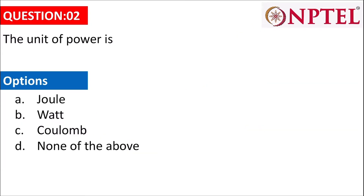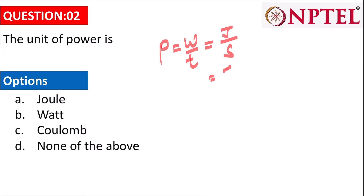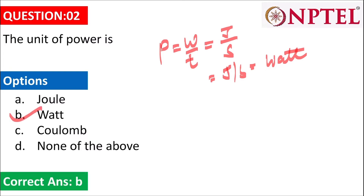The next question asks for the unit of power. Power is defined as work divided by time. The unit of work is joule and time is second, so joule per second equals watt. The answer is B.